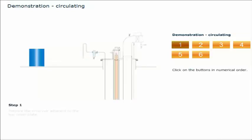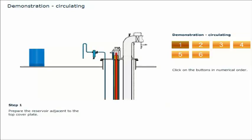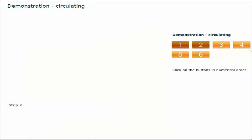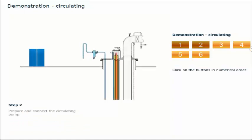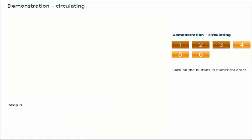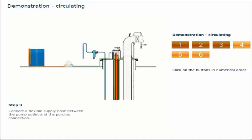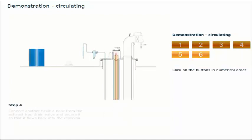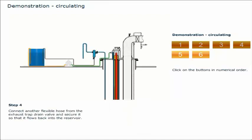Prepare the reservoir adjacent to the top cover plate. Fill with the required liquid. Add heating facility if necessary. Prepare and connect the circulating pump. Connect a flexible supply hose between the pump outlet and the purging connection. Connect another flexible hose from the exhaust trap drain valve and secure it, so that it flows back into the reservoir.